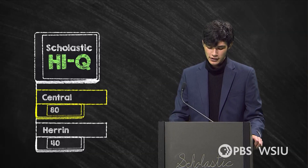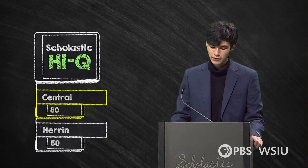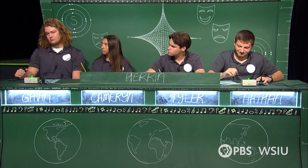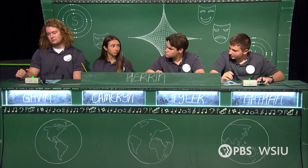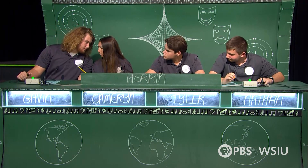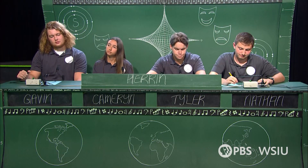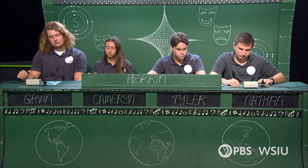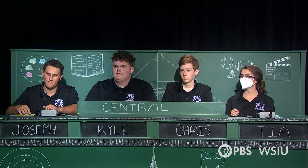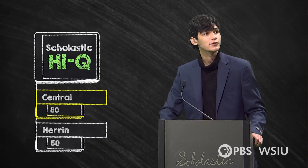For your bonus: Theodore Roosevelt won the Nobel Peace Prize for negotiating what 1905 treaty that ended the Russo-Japanese War? Answers of 'Treaty of Nanking' and 'Treaty of Gots' are both incorrect. The answer was the Treaty of Portsmouth.